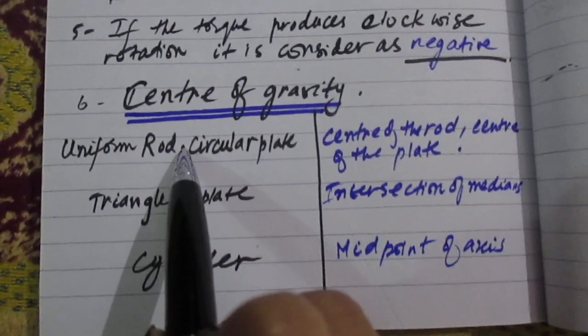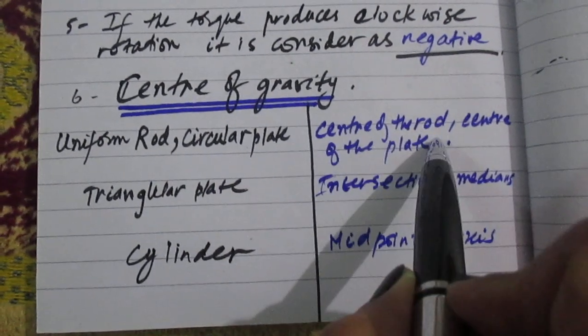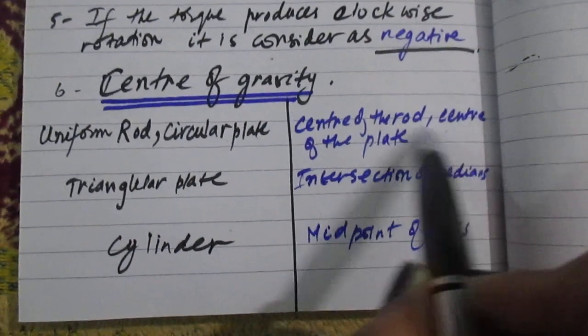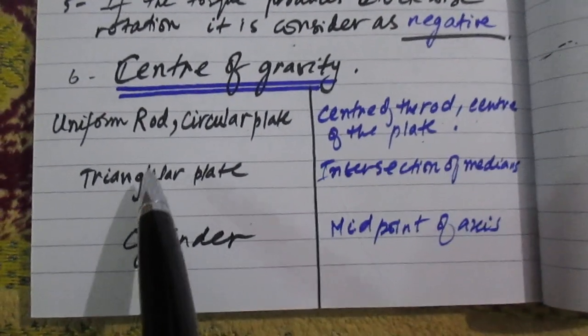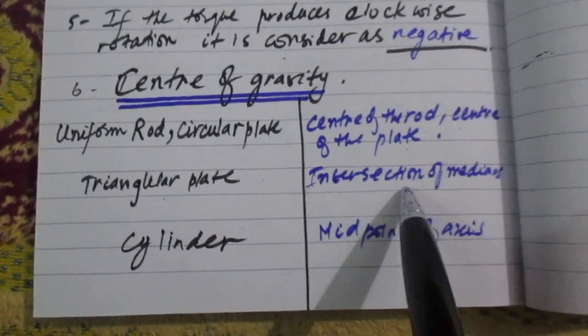For the uniform rod, the center of gravity is the center of the rod. For a circular plate, the center of gravity is the center of the plate. For a triangular plate, the center of gravity is the intersection of medians.